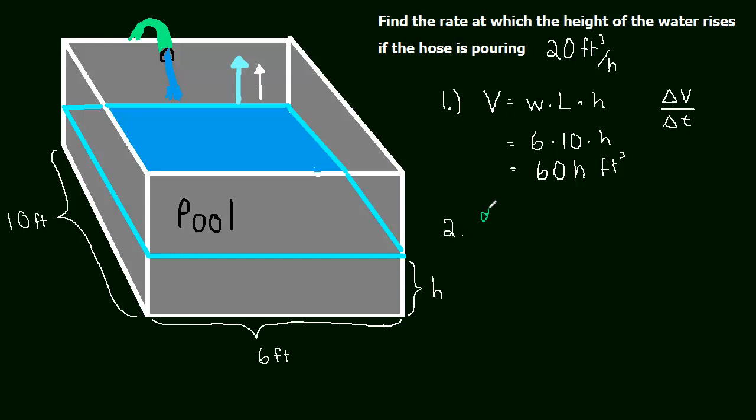So we're going to say the derivative with respect to time, because we want to know the change in volume per unit of time. So dV/dt, or d/dt of V, and this will be equal to the derivative with respect to time of 60h. And now this is just going to be dV/dt, the derivative of V with respect to time. So the instantaneous rate at which the volume is changing will be equal to 60 dh/dt, the instantaneous rate at which the height is changing.